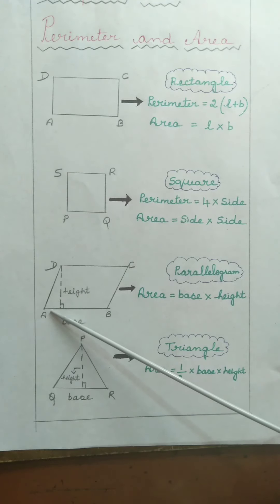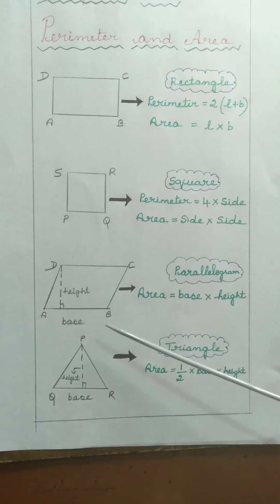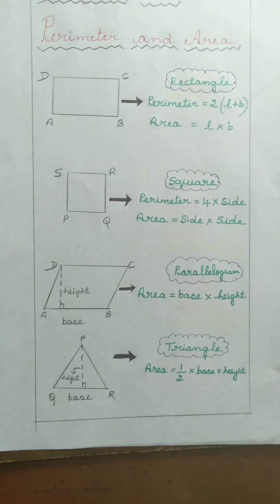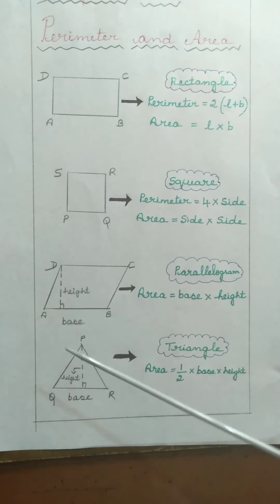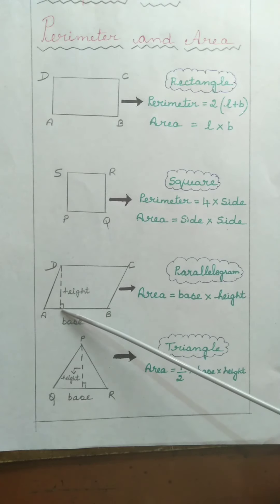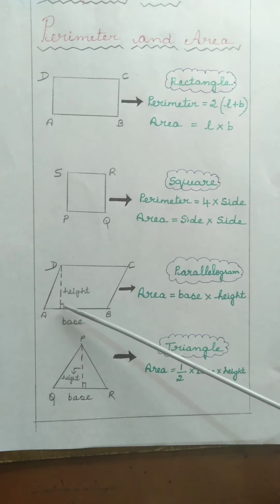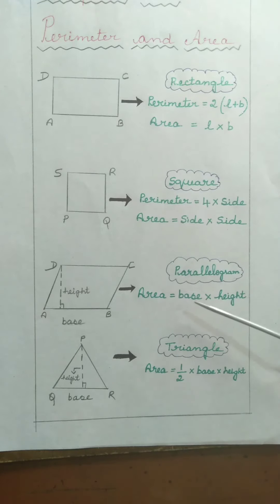Therefore, angle A equals angle C, and angle B equals angle D. So in a parallelogram, opposite sides are equal and opposite angles are equal. To find the area of a parallelogram, the formula is base into height. AB is the base, and from D a perpendicular straight line is drawn to the base AB forming 90 degrees, which is called the height. Therefore, area of parallelogram equals base × height.